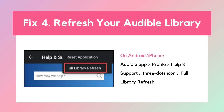Fix 4: Refresh your Audible library. If syncing still isn't working, the next fix is a simple library refresh on your Audible app. Go to your profile, tap the Menu button, then select Help and Support. Tap the three dots icon and choose Full Library Refresh. This will update your account status and refresh your Audible library.